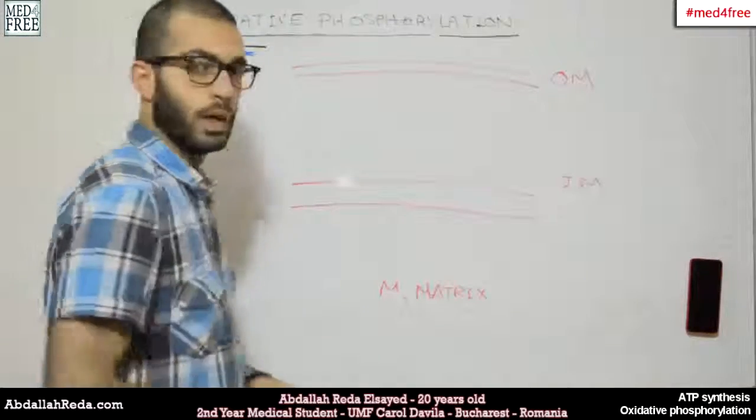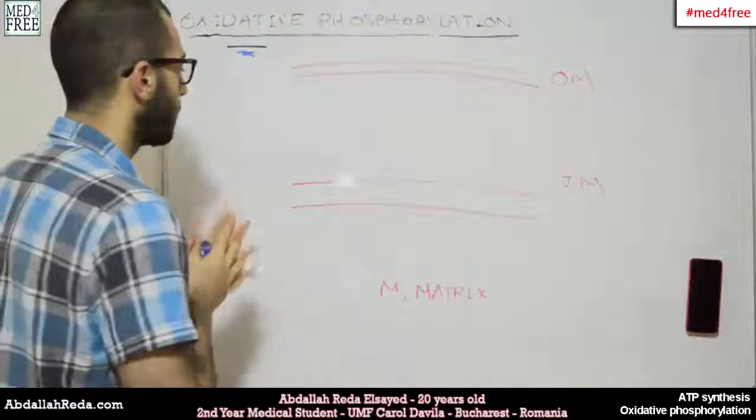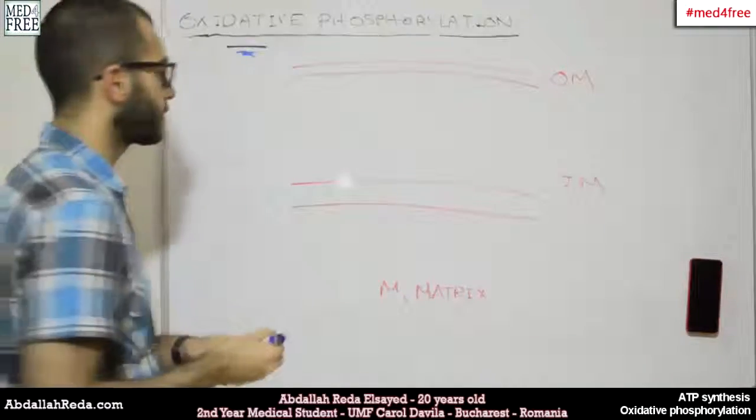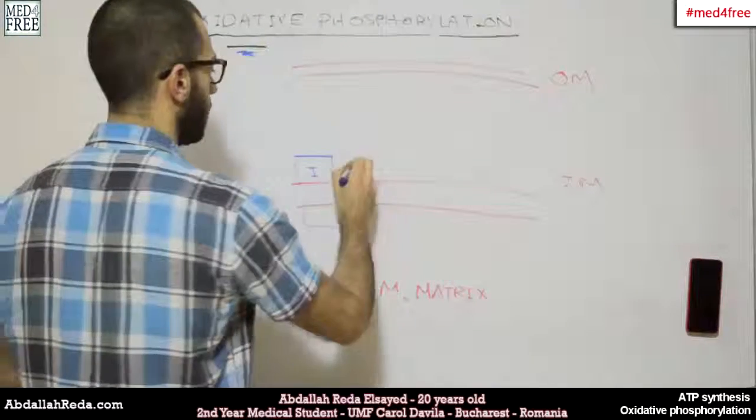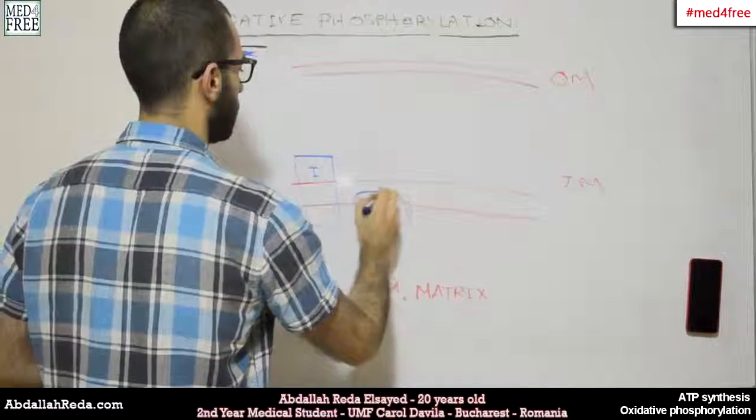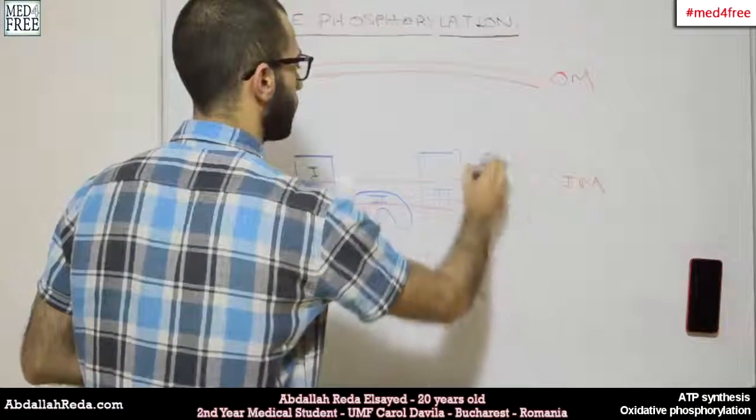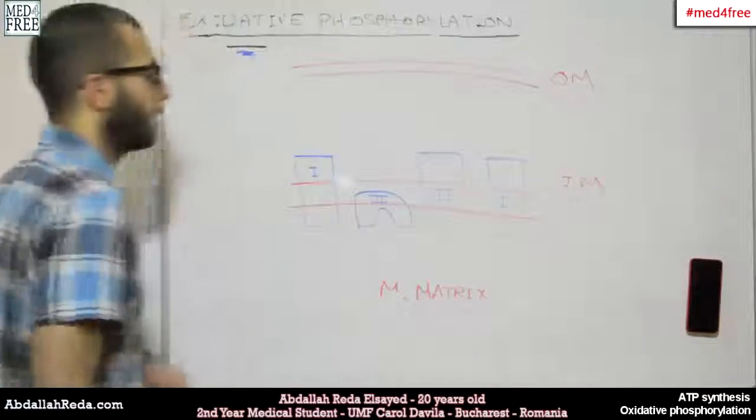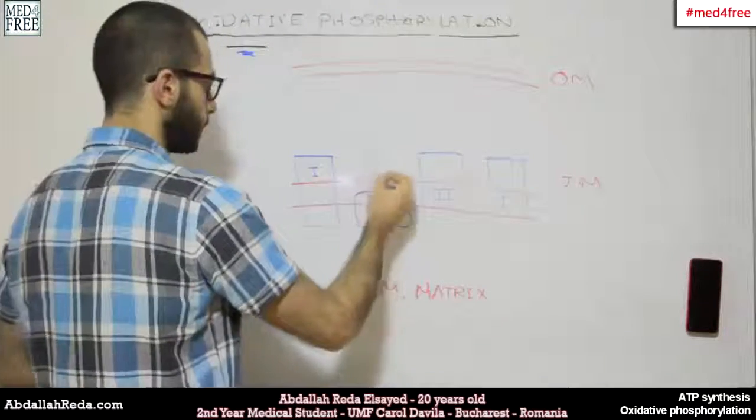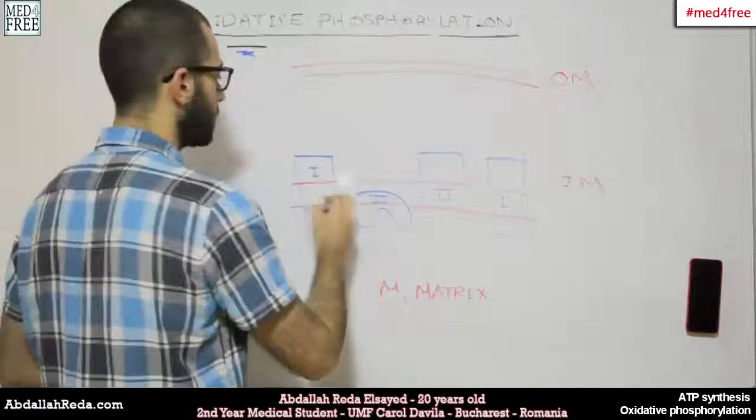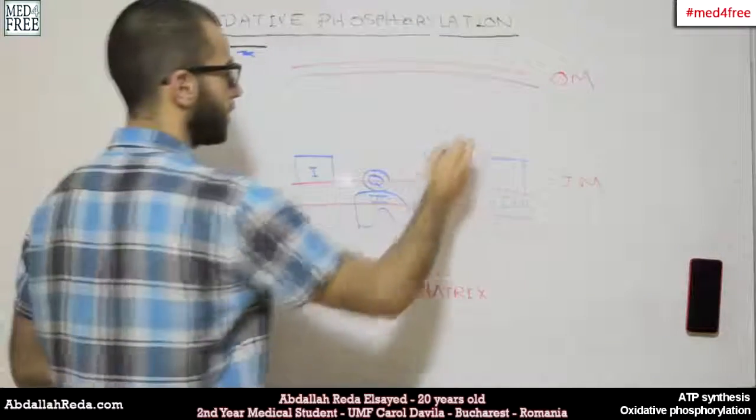On the inner membrane of the mitochondria, we would have molecular structures that are built up, and together they form something called complexes. We would have four of these complexes: the first one, the second, a third complex, and a fourth complex. We would also have other molecular structures that are less complicated, such as coenzyme Q and cytochrome C.